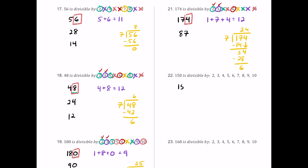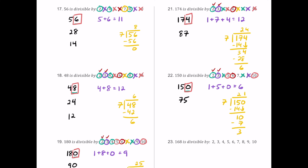For number 22, we have 150. It ends in an even number, so 2 works. Half of 150 is 75, which is odd, so 4 and 8 fail. The digit sum 1 plus 5 plus 0 is 6, a multiple of 3 but not 9. Since 2 and 3 both work, 6 works. It ends in 0, so 5 and 10 work. Dividing 150 by 7 leaves a remainder, so 7 fails.